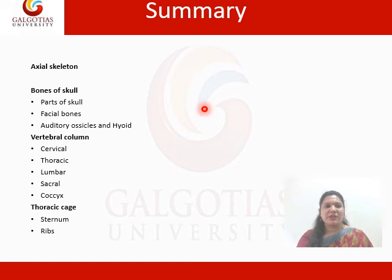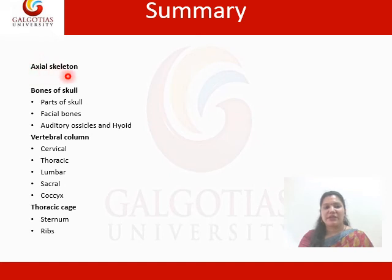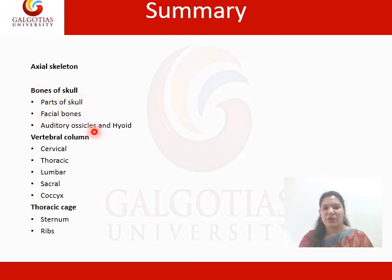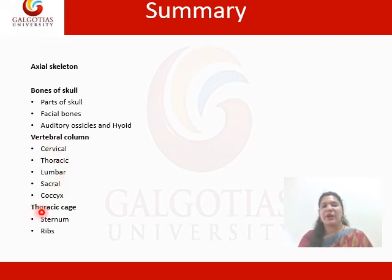So the axial skeleton is completed. Here is the summary of today's presentation. We have studied about the skeleton system and learned that there is axial skeleton and appendicular skeleton. We discussed the axial skeleton, which has three parts: the bones of the skull (including skull, facial bones, auditory ossicle bones and one hyoid), the vertebral column (cervical, thoracic, lumbar, sacral and coccyx), and the thoracic cage (sternum and ribs).